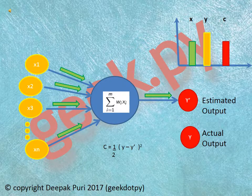Here y' is the estimated output from our neural network and y is the actual output.